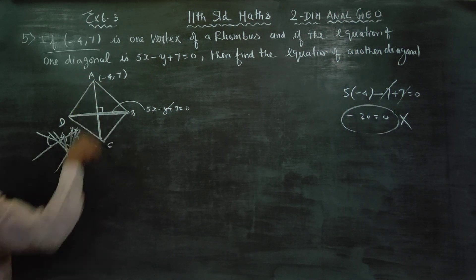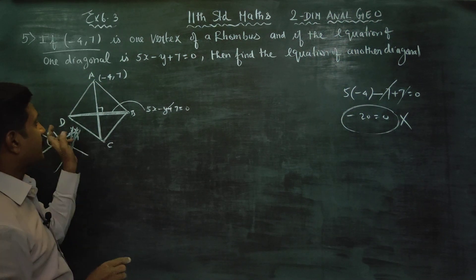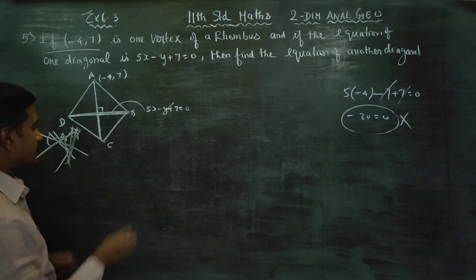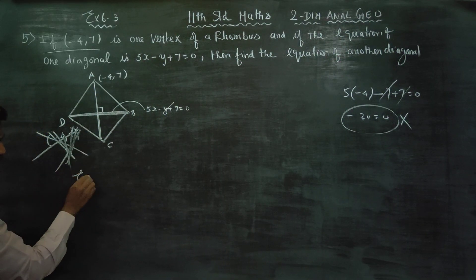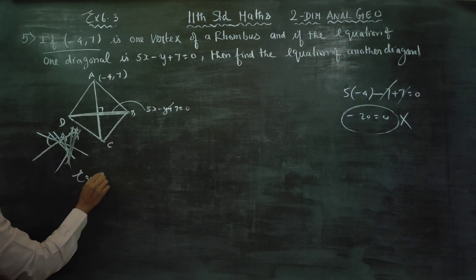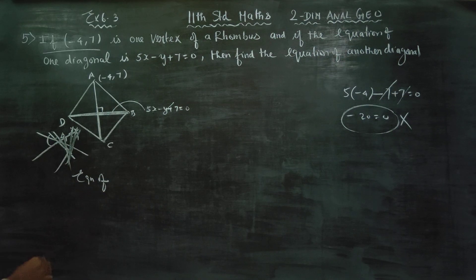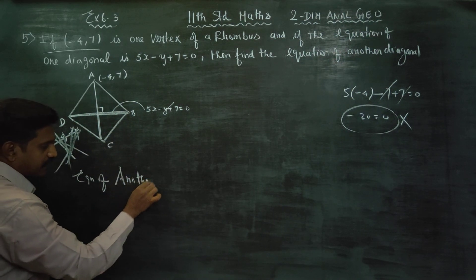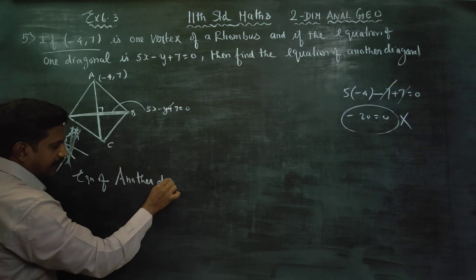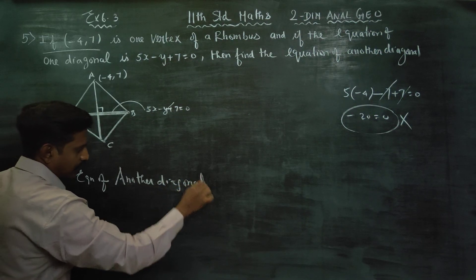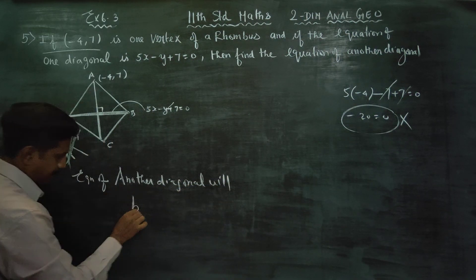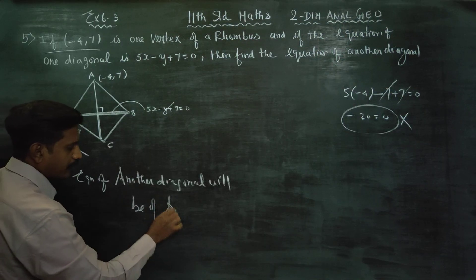Diagonals are always perpendicular in a rhombus. So the equation of another diagonal will be of the form — using the perpendicular relationship.